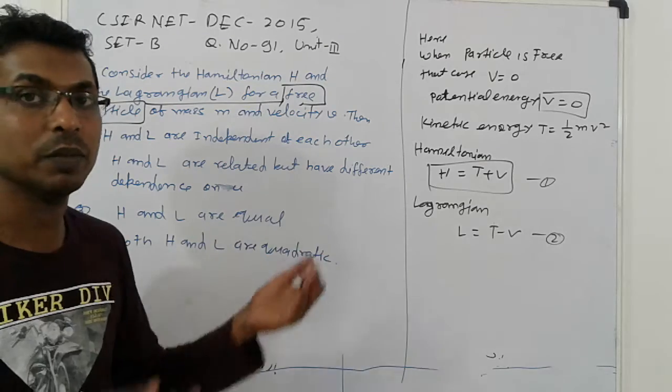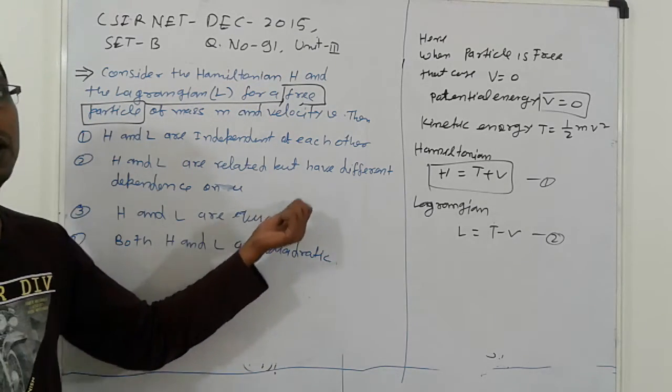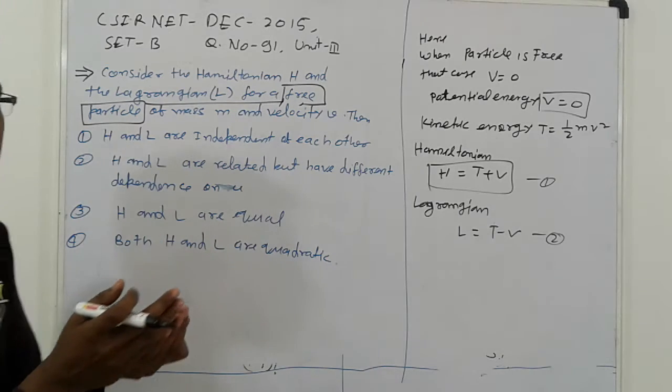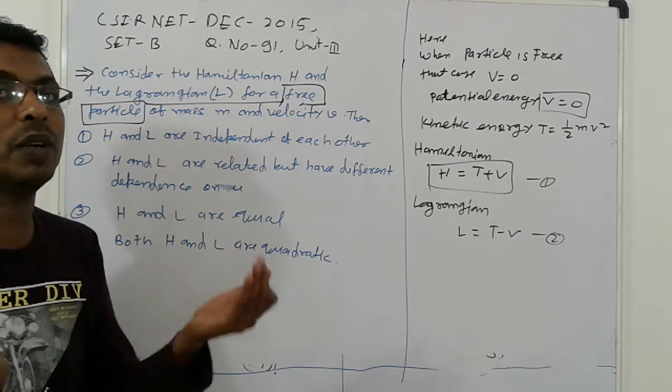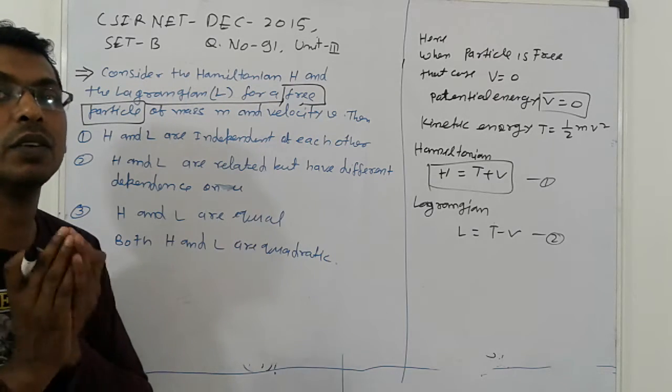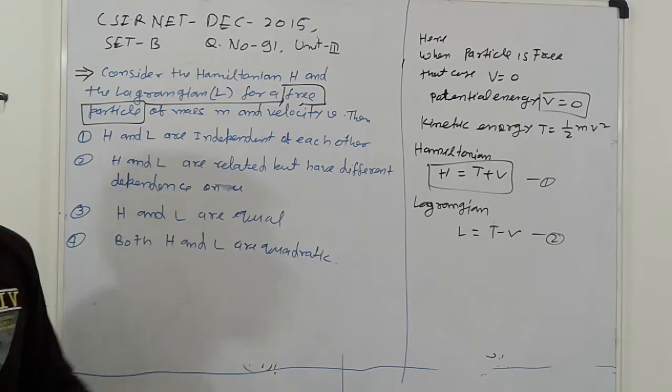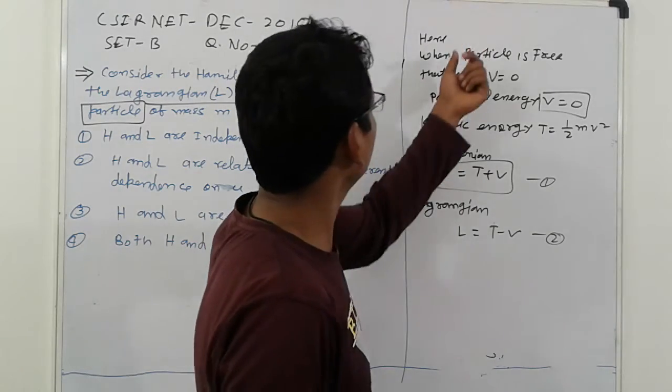But it is something indirectly you can see which is not possible, because for a particle, Lagrangian and Hamiltonian are not different. Potential energy and kinetic energy are not different for this. Next, H and L equal something. So come here.